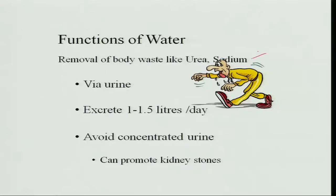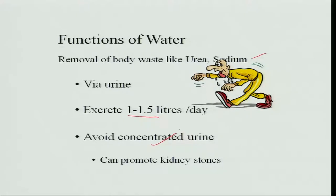Water also removes waste products like sodium. Whenever there is excess sodium, water removes it by increasing urination. Normally, 1 to 1.5 liters of urine per day is excreted, through which all waste products leave the body and homeostasis is maintained. Water also helps avoid concentrated urine — keeping it diluted when excreted.